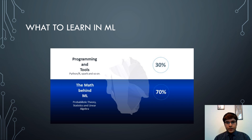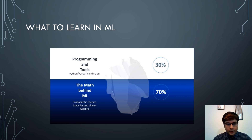This slide covers what to learn in ML. Essentially, 30% of ML involves programming and tools, and 70% involves learning the math behind ML — which includes probabilistic theory, statistics, and linear algebra. Programming and tools include languages and frameworks such as Python, R, and Spark.